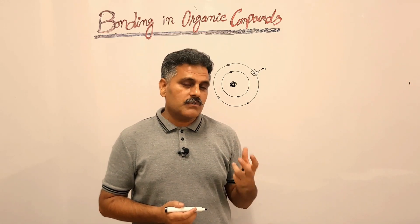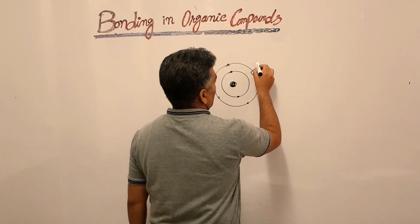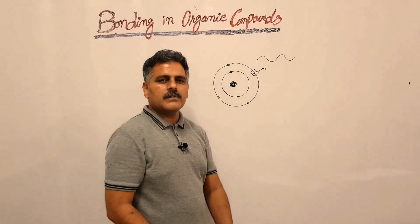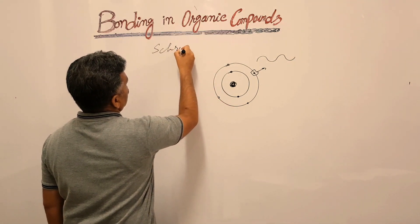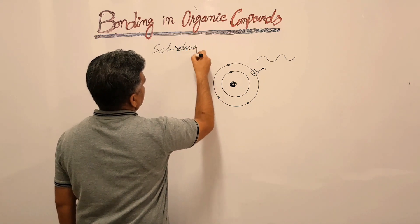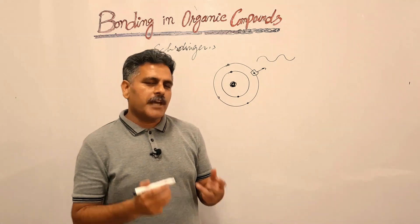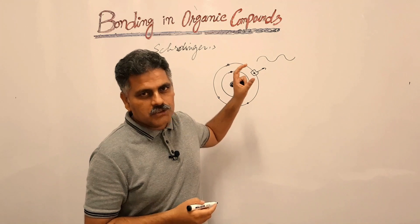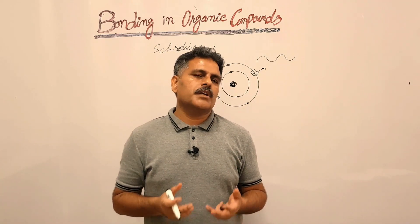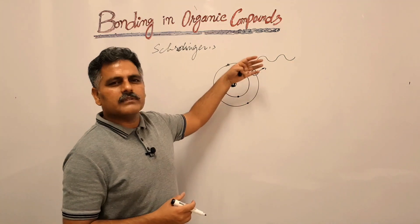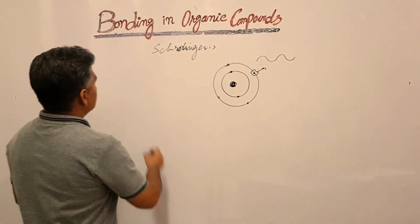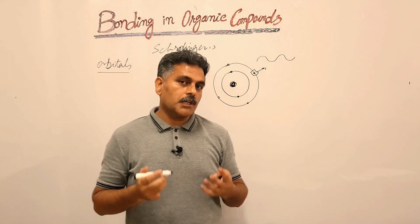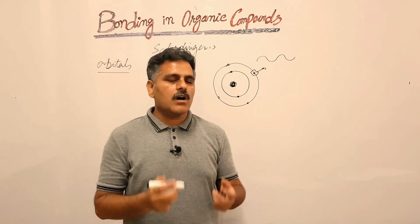Electrons have some properties of waves. If we consider these electrons as waves, then Schrödinger gave a wave equation to describe the properties of these electron waves around the nucleus. When we solve the Schrödinger wave equation, we have a series of orbitals around the nucleus. An orbital is a space around the nucleus where the probability of finding electrons is maximum.